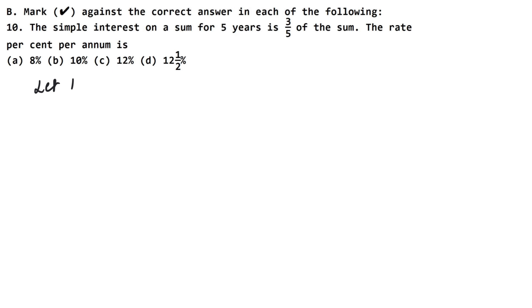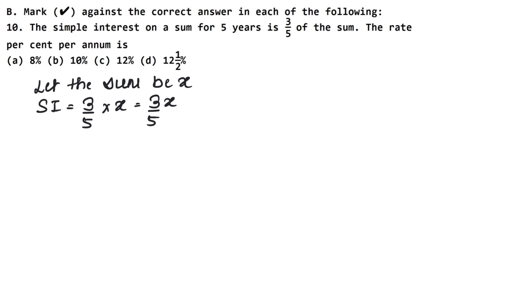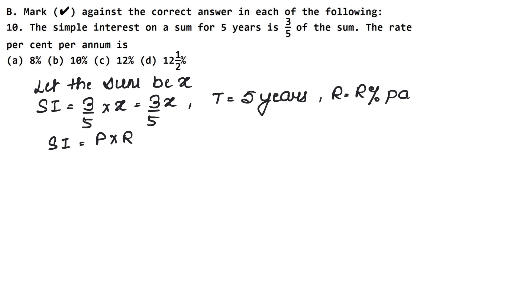So if we don't know the sum, let the sum be x. Now the sum is x, so the simple interest is three-fifth of the sum. We don't give the rate, so it is r upon hundred. And the time is five years.